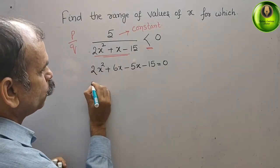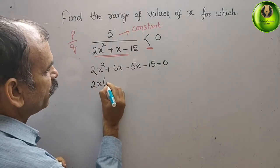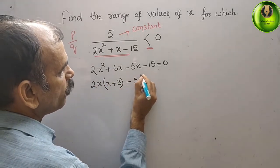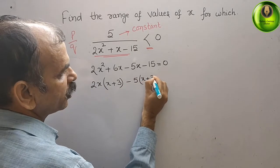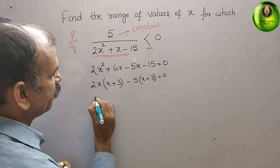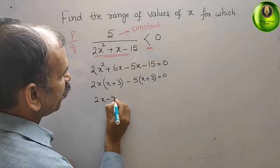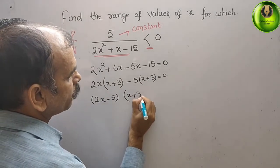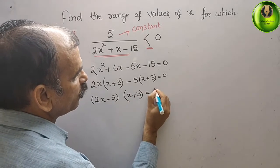Next, 2x is common, here you will get x + 3. Here minus 5 is common, again x + 3, that is equal to 0. Now the two factors are 2x - 5 and x + 3, that is equal to 0.